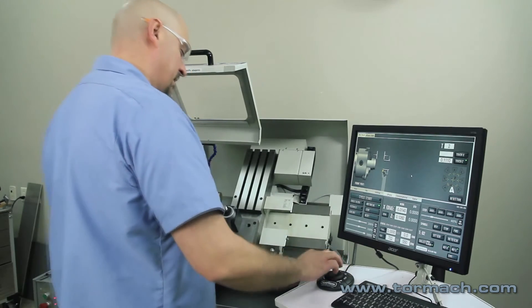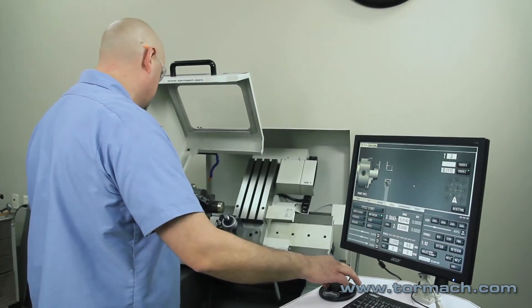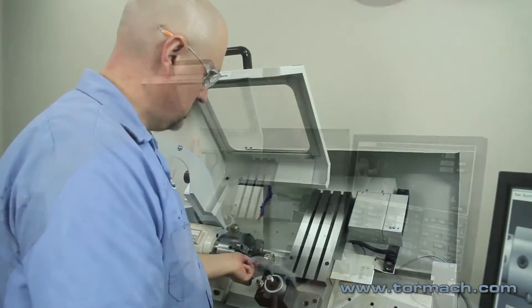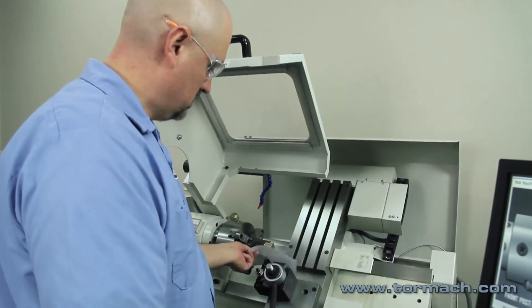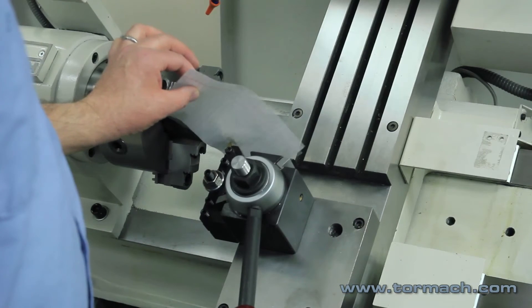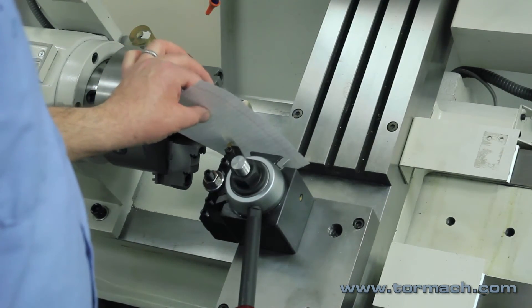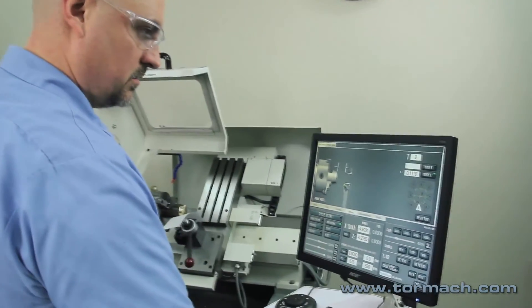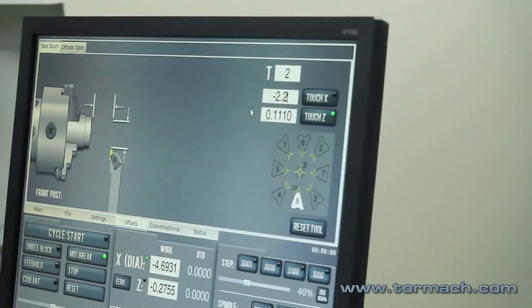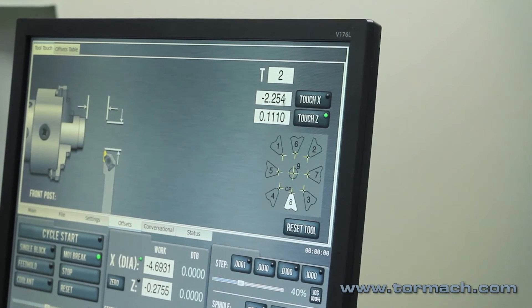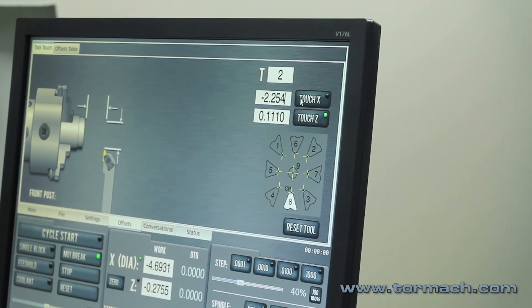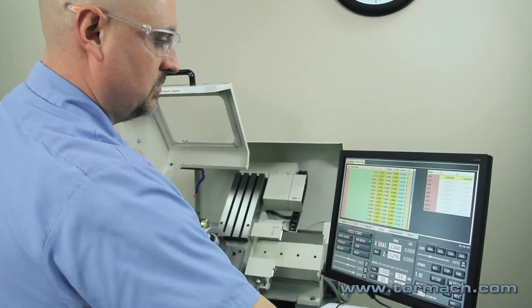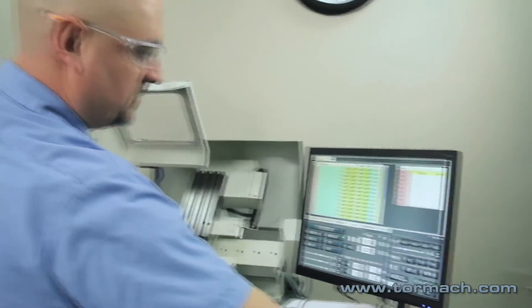And then our diameter is the same as when it was on the other tool as far as the touching it off part. Right there. Enter our diameter. Now if we take the offset table, those are our values.